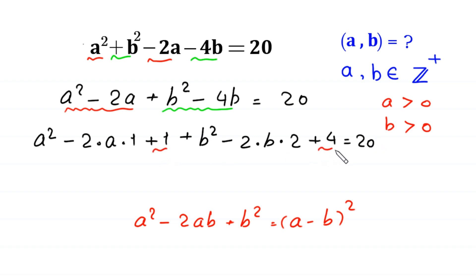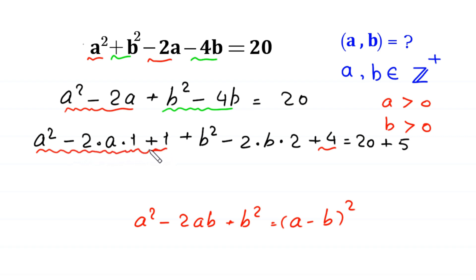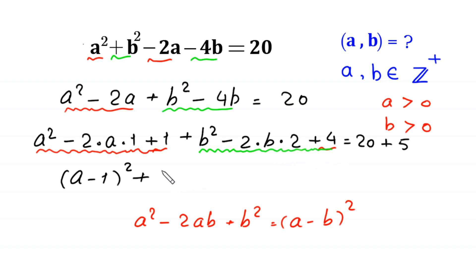Now we have added 1 and 4 on the left-hand side — that is 5 total added on the left. So to balance this, we also add 5 on the right-hand side. By using the algebraic identity, a squared minus 2 times a times 1 plus 1 becomes (a minus 1) whole squared, and b squared minus 2 times b times 2 plus 4 becomes (b minus 2) whole squared, equal to 25.